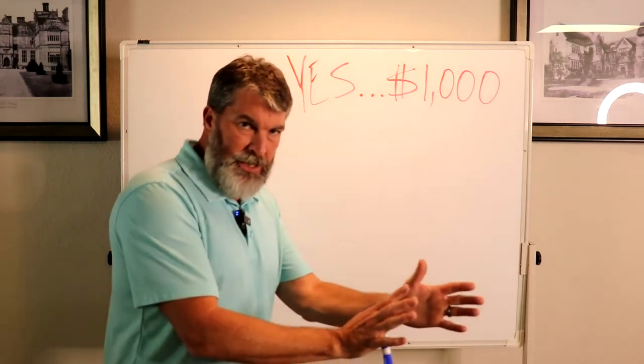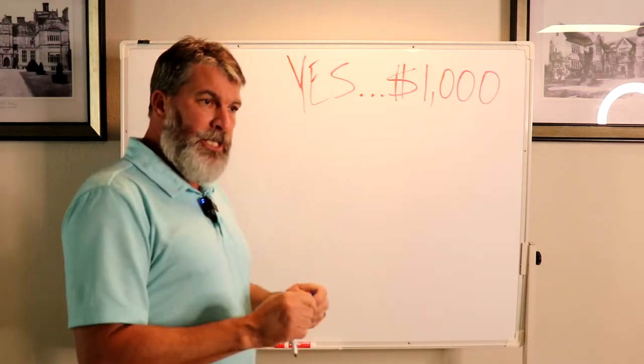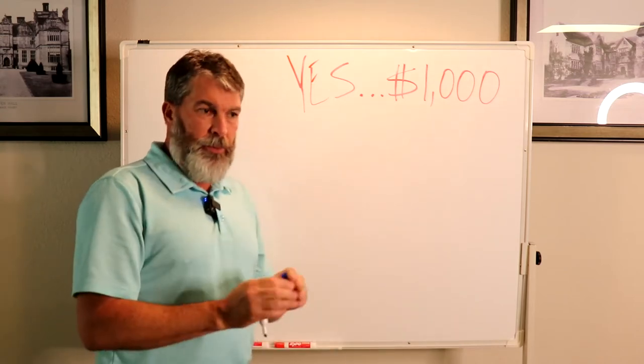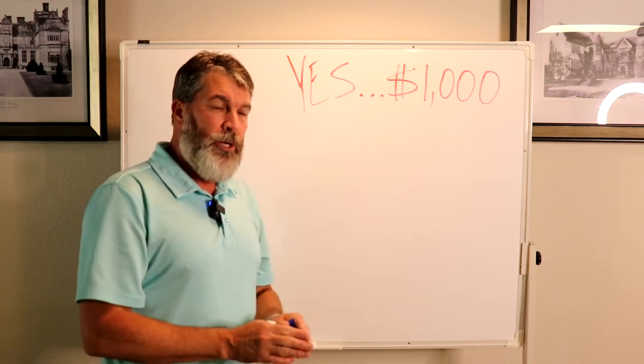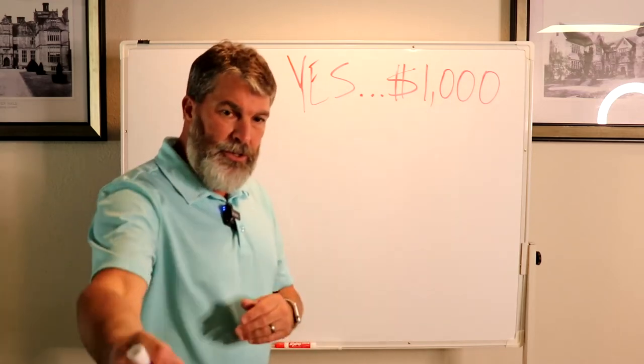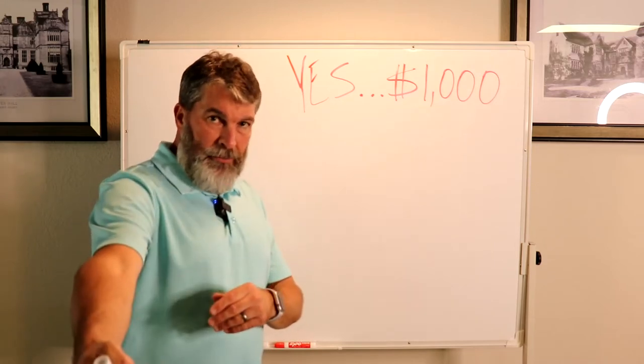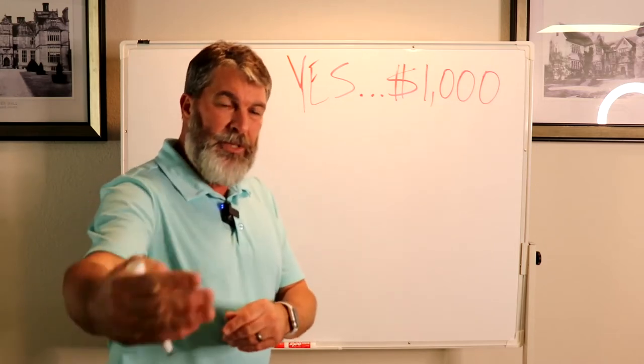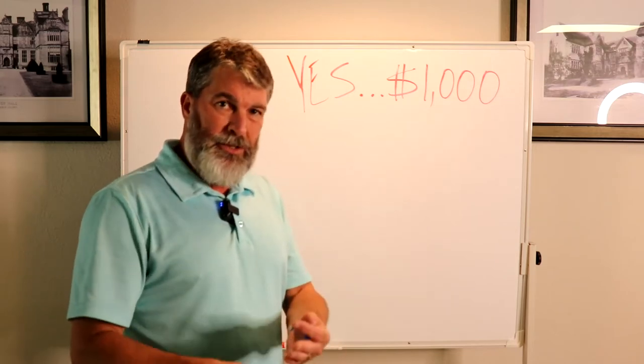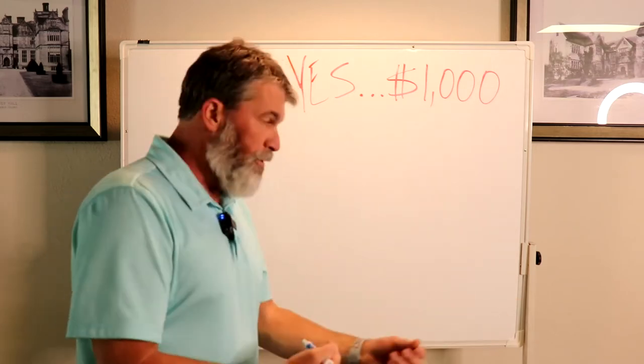It goes under the same FHA guidelines. So FHA says you got to have three and a half percent invested to purchase a property. And then there's closing costs. The lender charges you a little money up front to give you the loan, and you have to make sure your escrows are started and established because you have property taxes and insurance and all that. So that's your closing cost.